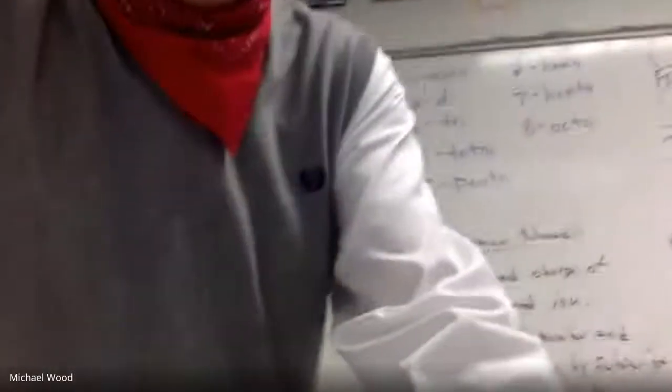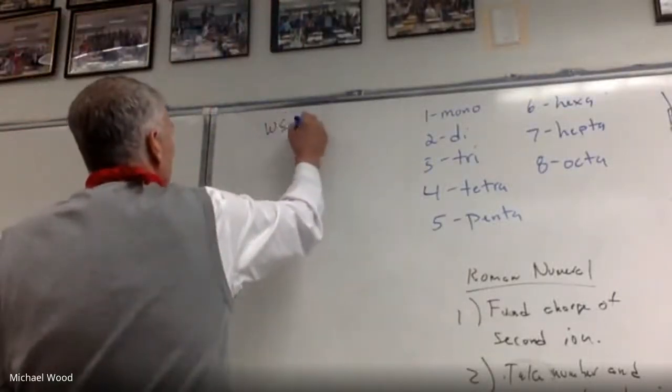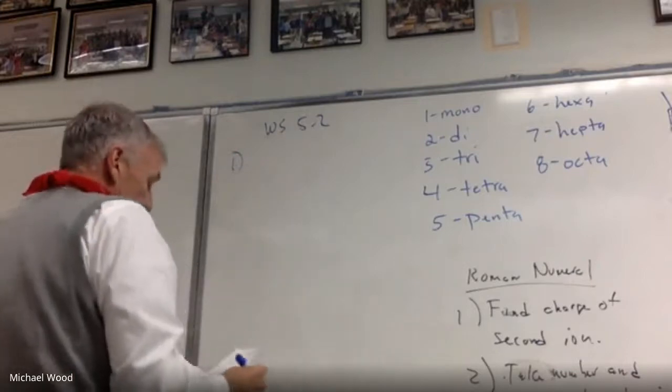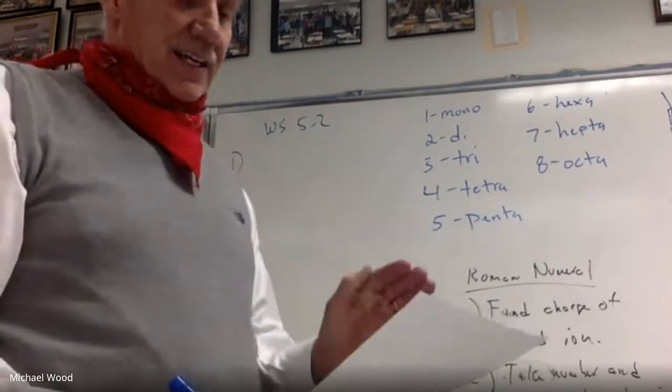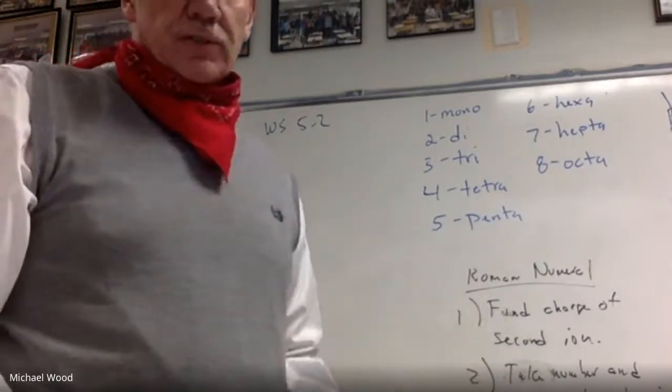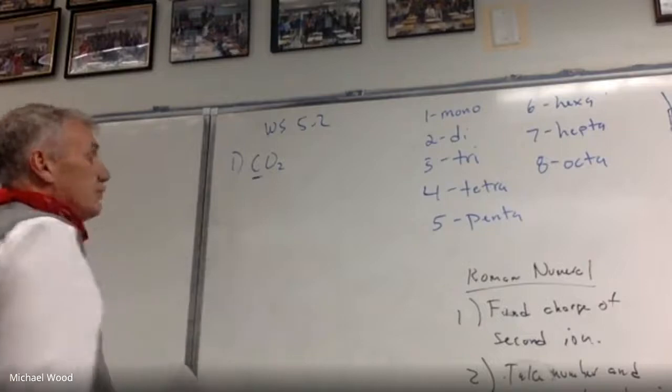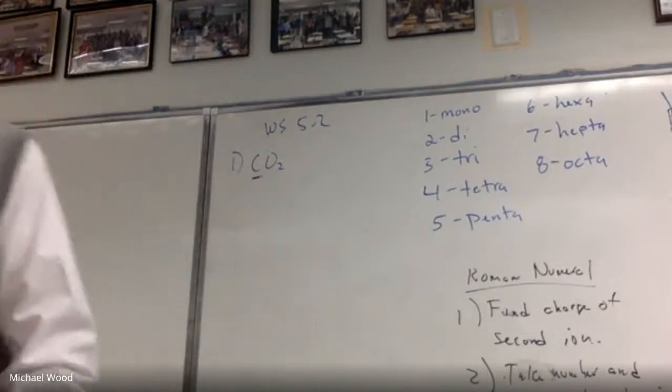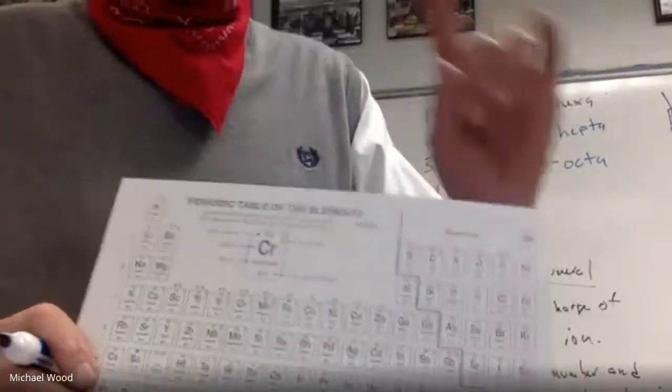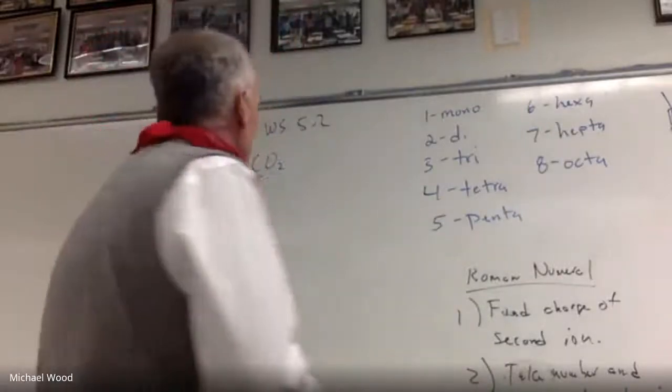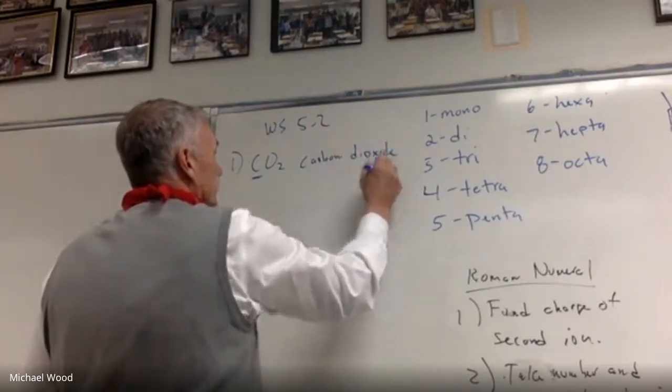Back to the board. So number one on worksheet 5.2. I will tell you the first 19 are all type 3s. So number one, we base this off of the first element. The first element carbon is based off the location of the first element in the formula. Carbon is right here. It's a non-metal. So that's where I use prefixes. So this is carbon dioxide.